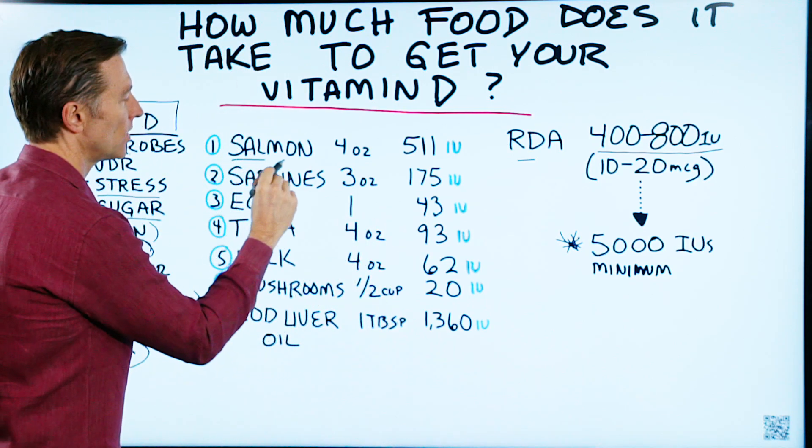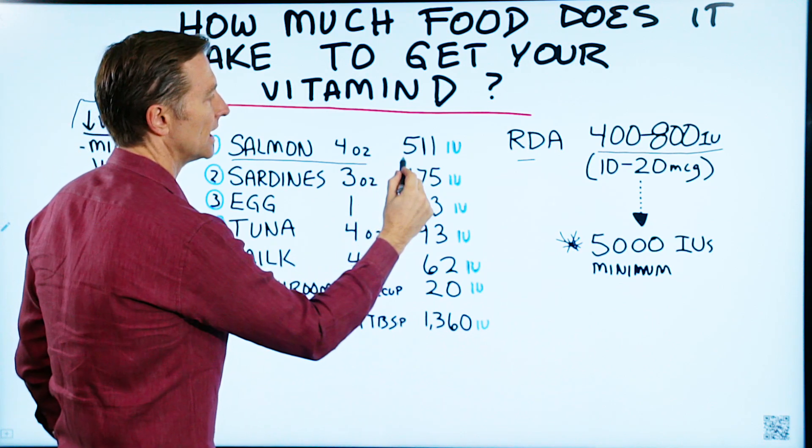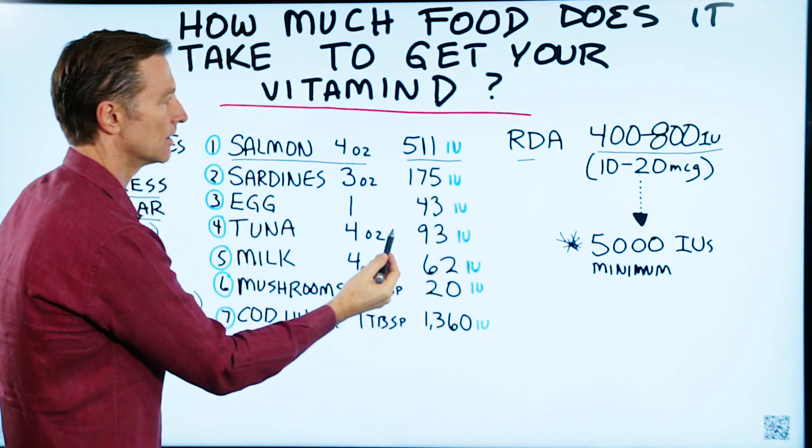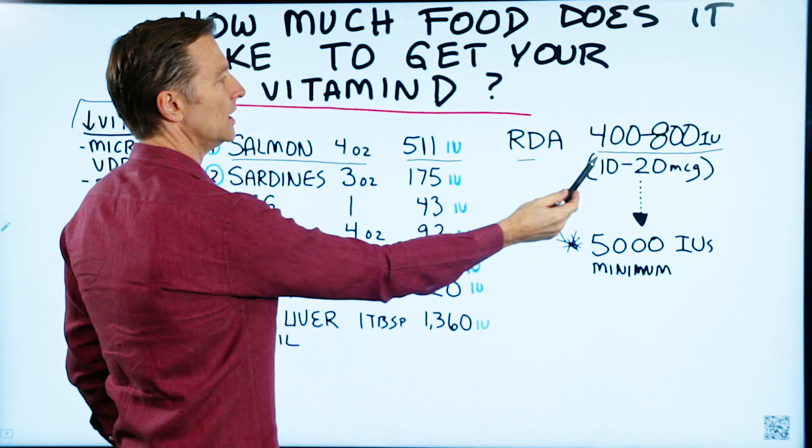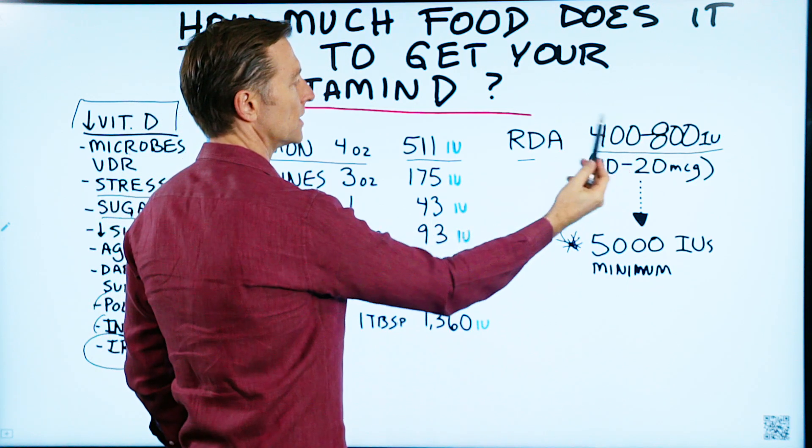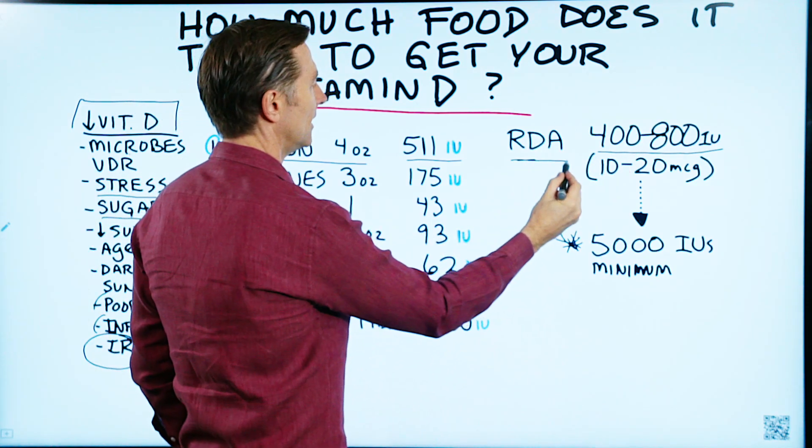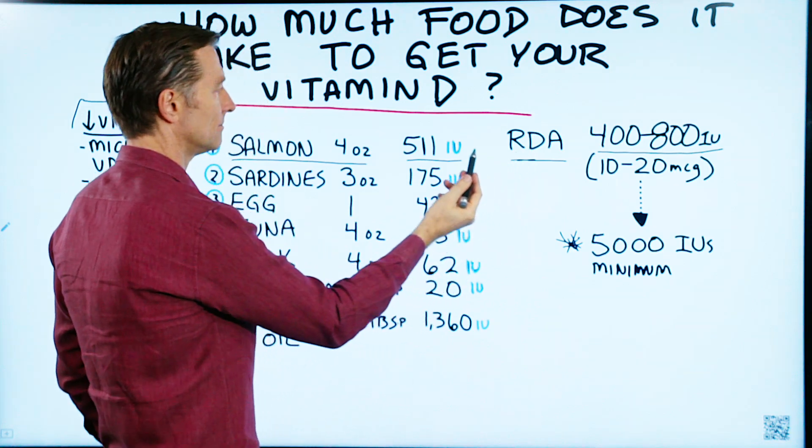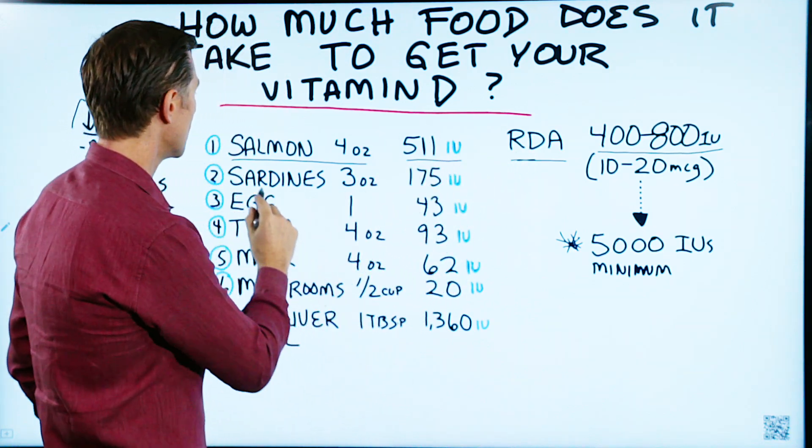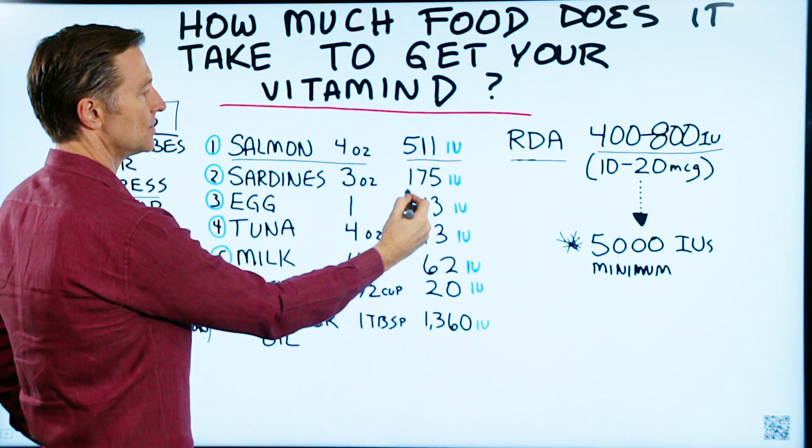Salmon, four ounces, only has 511 international units. Okay, so maybe that might fit you into the bare minimum according to the USDA. But from my viewpoint, that would not be enough. Sardines, three ounces, give you 175 IUs.